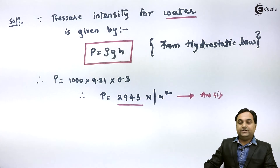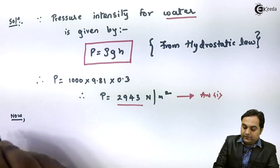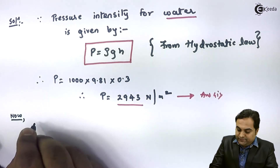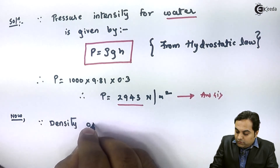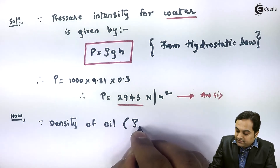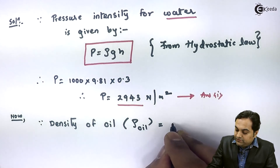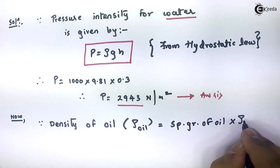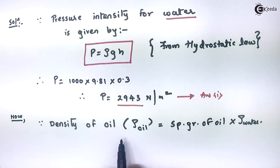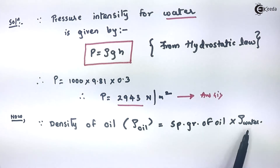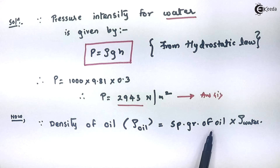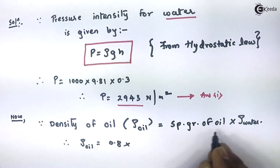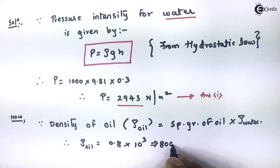Similarly, for oil, since the specific gravity of oil is given, we first calculate the density of oil. Density of oil equals specific gravity of oil multiplied by density of water — this is the general formula for any fluid other than water. Therefore, density of oil equals 0.8 into 1000, giving 800 kg per meter cube.